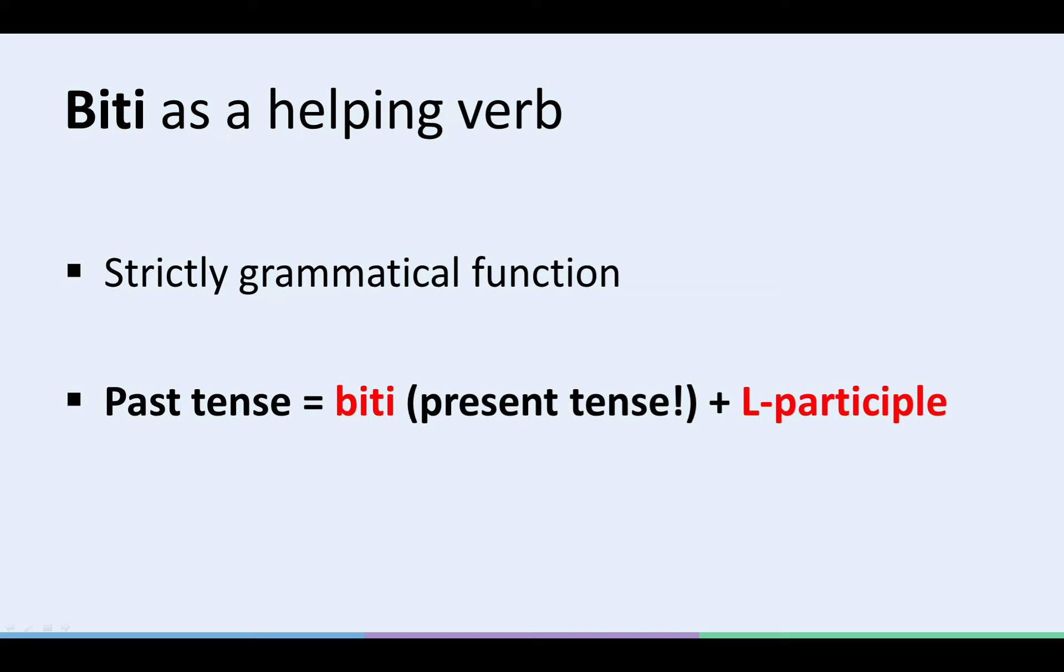Now, as it happens, BITI in the present tense acting as a HELPING verb is used to form the past tense in Slovene. We form the past tense in Slovene by using the present tense together with a word we call the L participle. For example, ON NE DELA means HE ISN'T WORKING, but ON NI DELA means HE WASN'T WORKING.